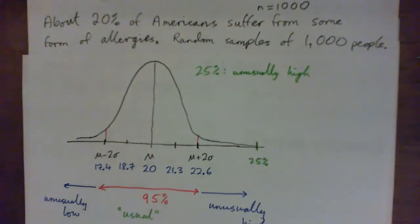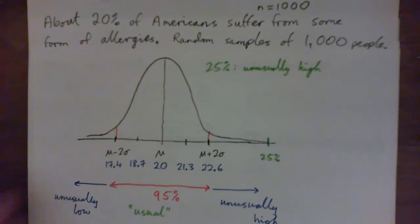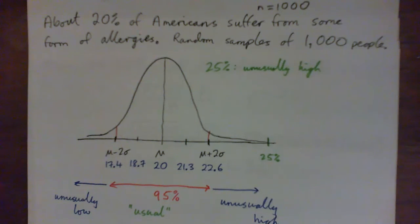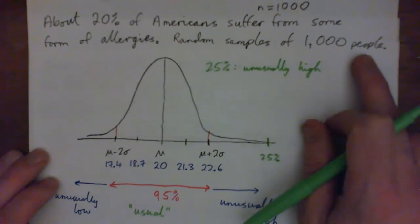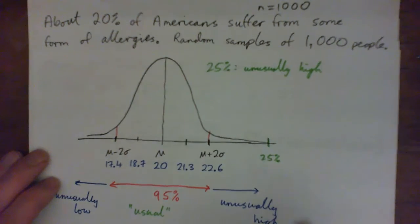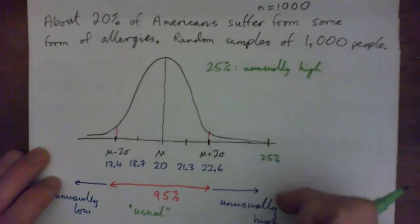Think about a real-life example: you're looking at a thousand people and their allergy rate is 25% — you'd say, wow, that's unusually high. Think about schools, for example. Let's say you were looking at the allergy rate in a school with a thousand students and 25% of them have allergies. That's unusually high, and then you'd ask: is there something about that population?